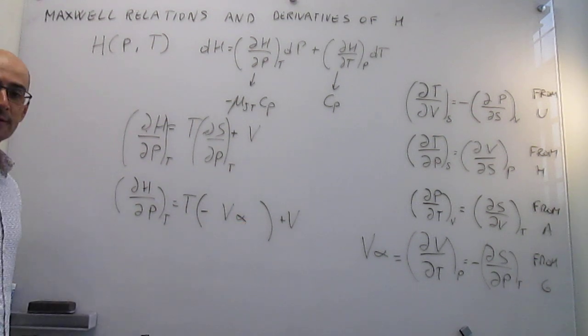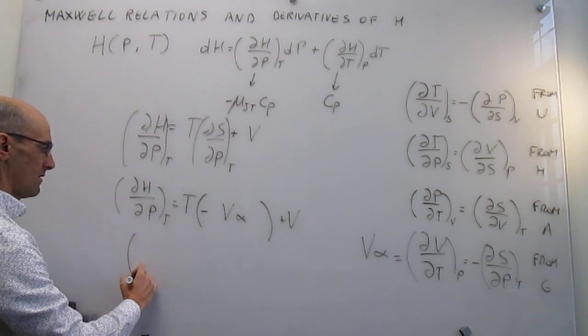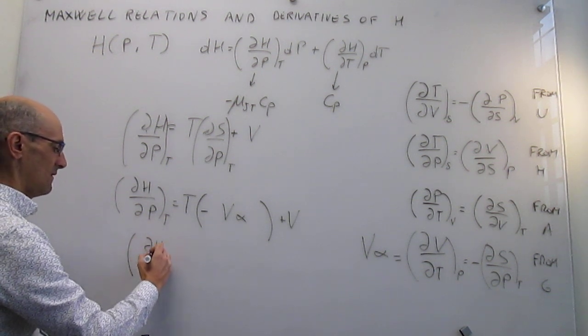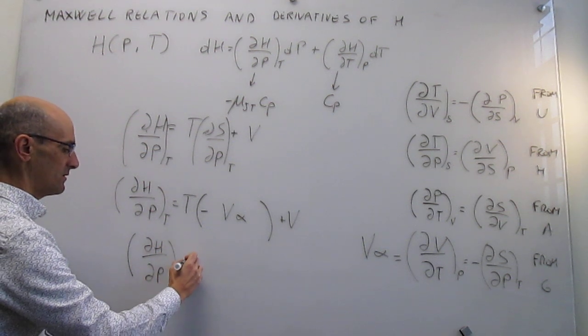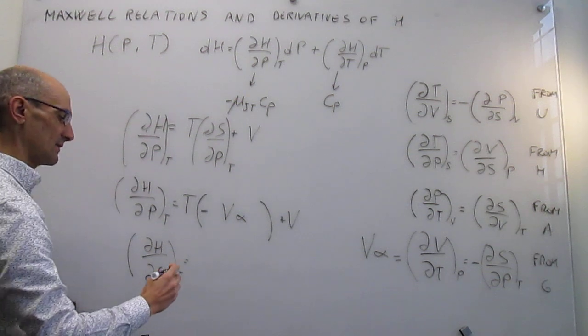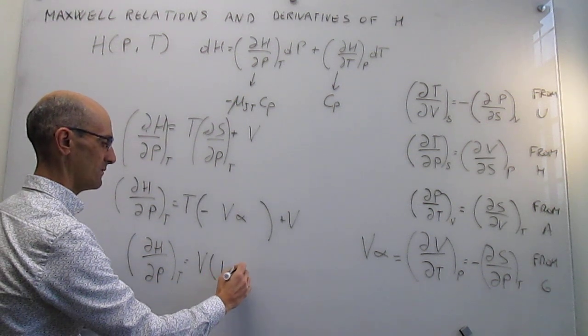And now your expression is very, very straightforward. I'm going to try to go here one step lower. The way that the enthalpy changes with pressure at constant temperature is simply this expression: volume, common factor of 1 minus T alpha.